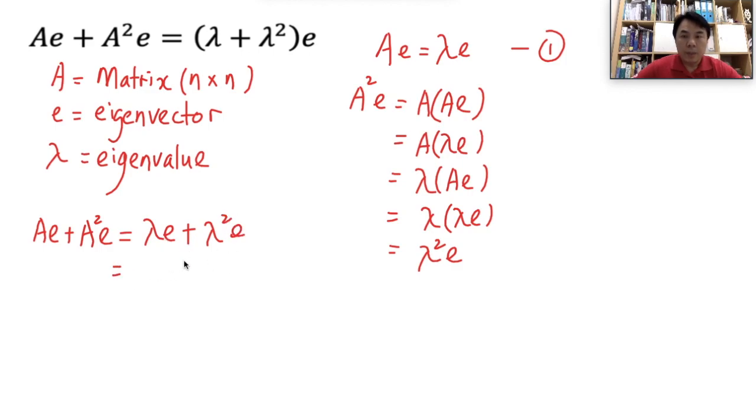And then, we know that the scalar and the vector can be factorized out. In this case, we will get lambda plus lambda squared e. Now, that has proven.